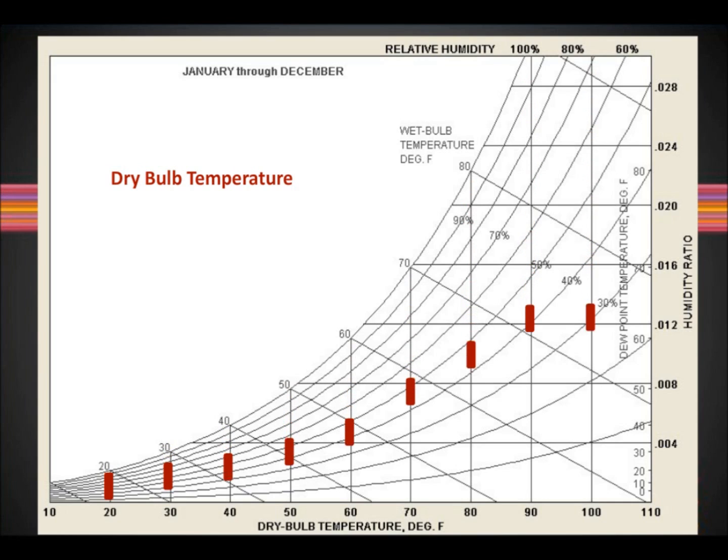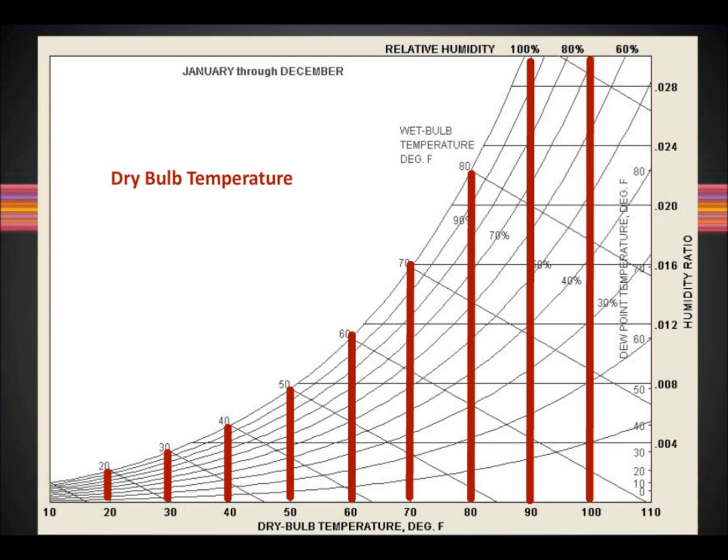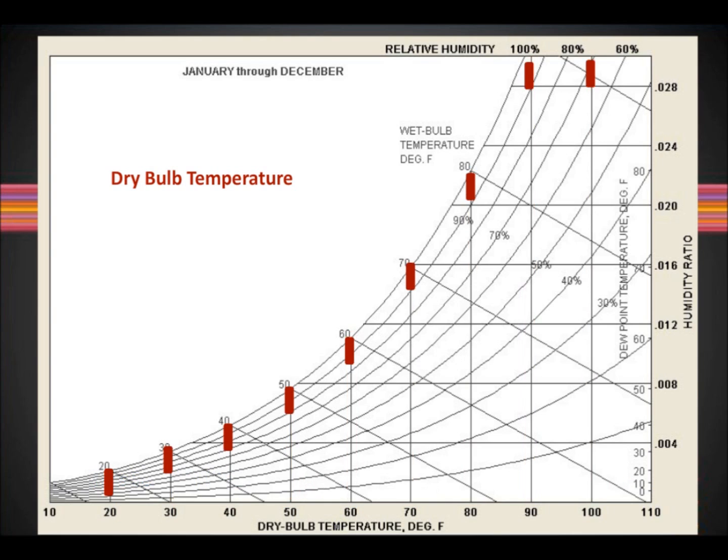Dry bulb temperature is the most common measure of temperature as measured by a thermometer with a dry bulb. On the graph, the vertical lines represent the dry bulb temperature. As you go towards the right side, it means that there is more sensible heat. As you go towards the left side, it means that there is less sensible heat.